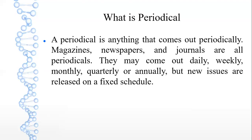What is a Periodical? A periodical is anything that comes out periodically. It is also called a Serial, which means it appears in a series. Magazines, newspapers, and journals are all periodicals. They may come out daily, weekly, monthly, quarterly, or annually.